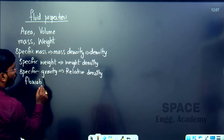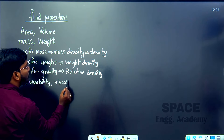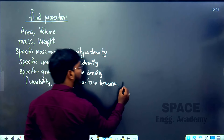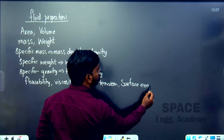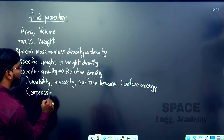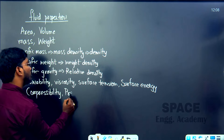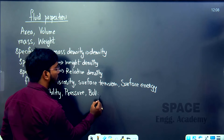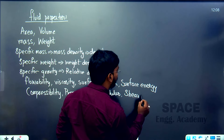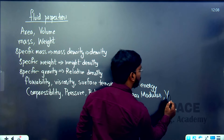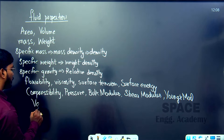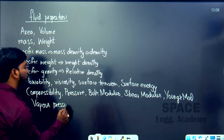Then we have specific gravity, also called relative density, then velocity, flow ability, viscosity, surface tension, surface energy, compressibility, pressure, bulk modulus, shear modulus, Young's modulus, vapour pressure, and cavitation. These are the fluid properties we are going to discuss.